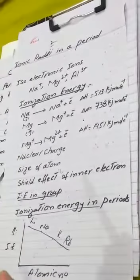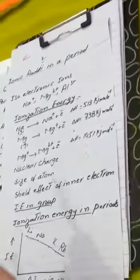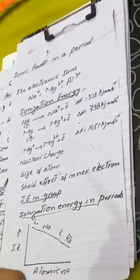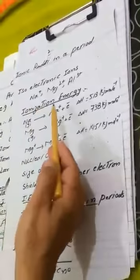Our next topic is ionization energy. As we studied about cations — cations are formed by the removal of electrons — in this process some energy is absorbed. This is known as ionization energy. The minimum amount of energy required to remove the most loosely bonded electron from a gaseous atom is known as ionization energy.